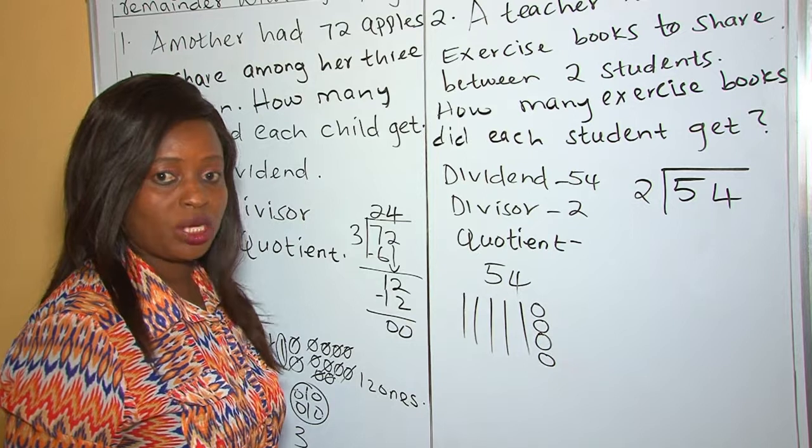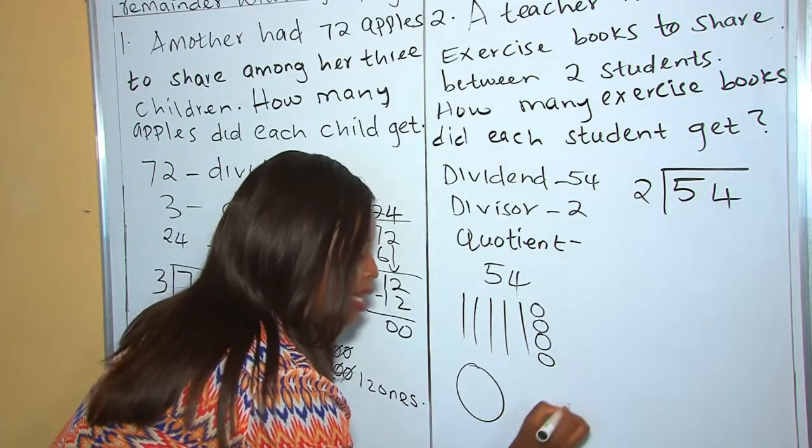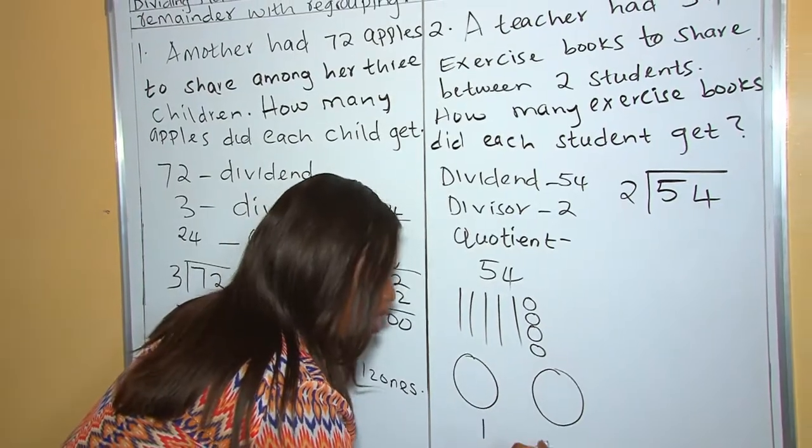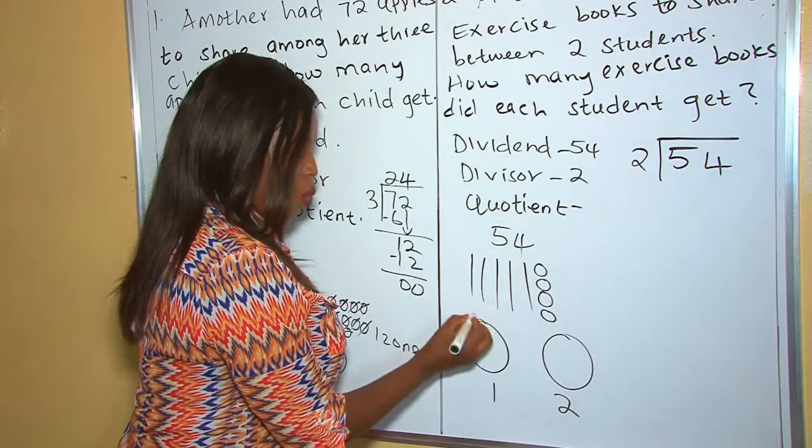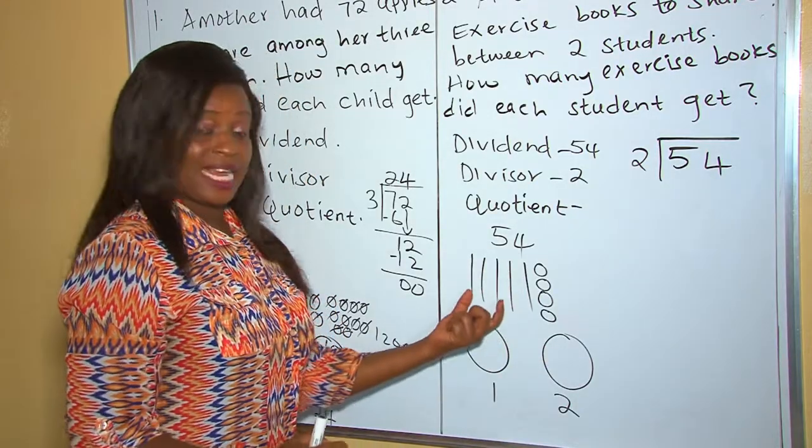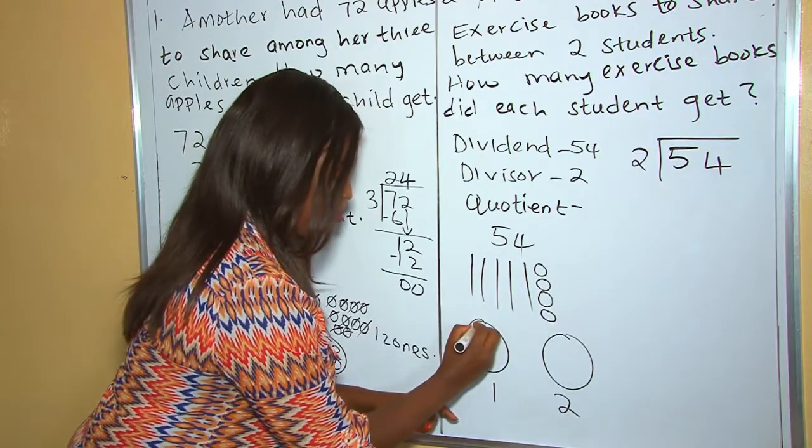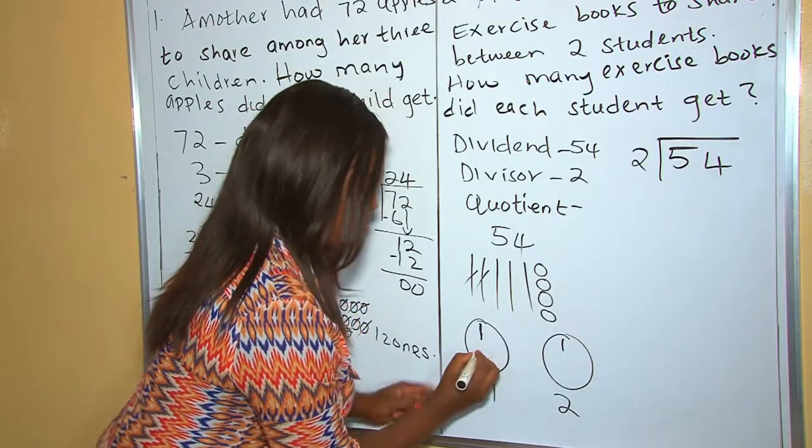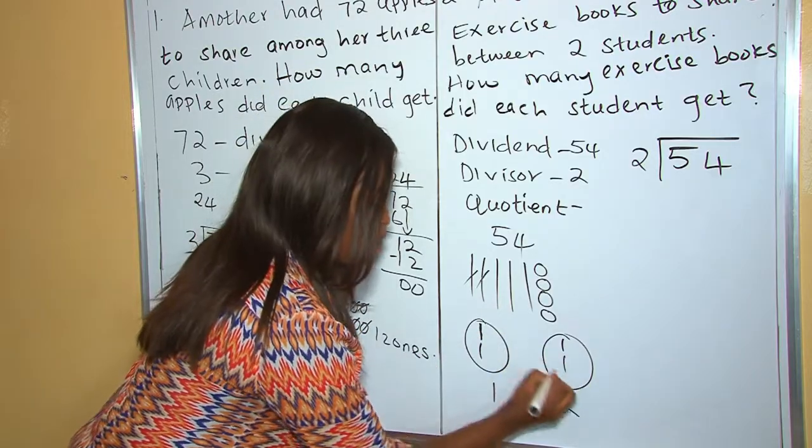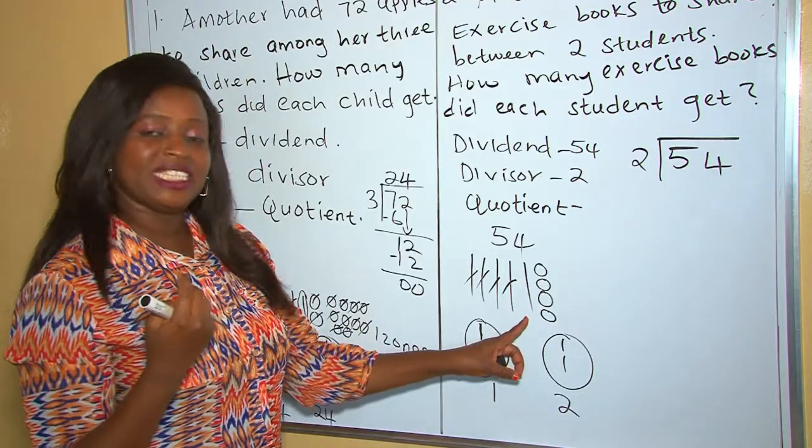And how many children? How many students? There are two students. 1, 2. This student 1, this student 2. Now let's start sharing the exercise books. So we normally start with tens. So the first bar there, that's the first ten. The second ten. The third ten. The fourth ten. Now after that, we remain with one ten.